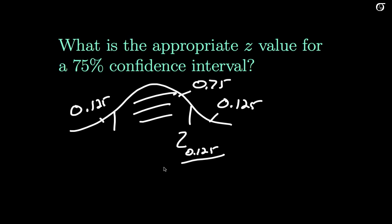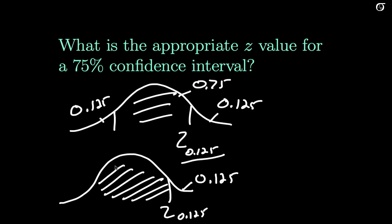And this is what we want to find. But we don't go running off to the table just yet, because that doesn't look quite like what we need. z at 0.125, giving us 0.125 out here. We need the area to the left, simply because that's how the computers and the tables are set up. So this is 1 minus 0.125. And that is going to be 0.875.